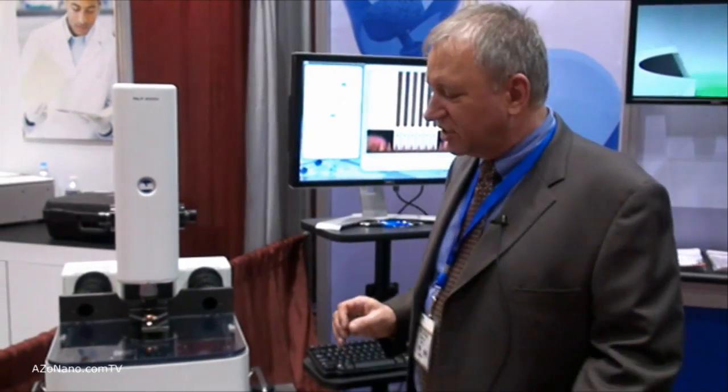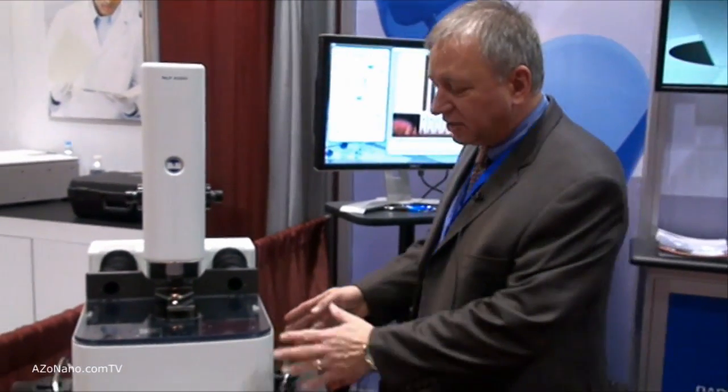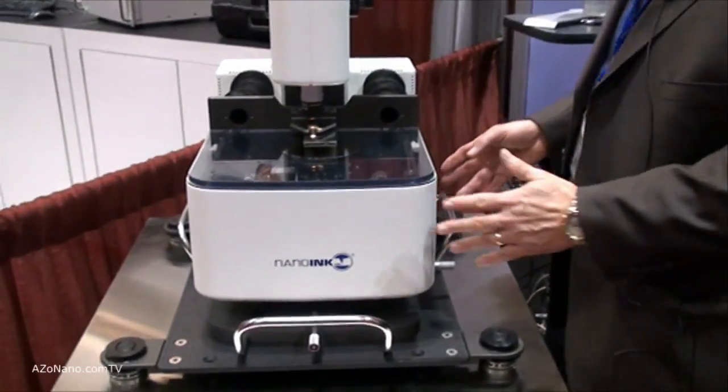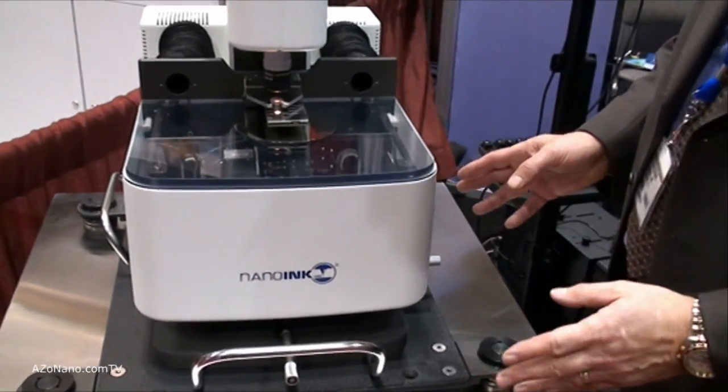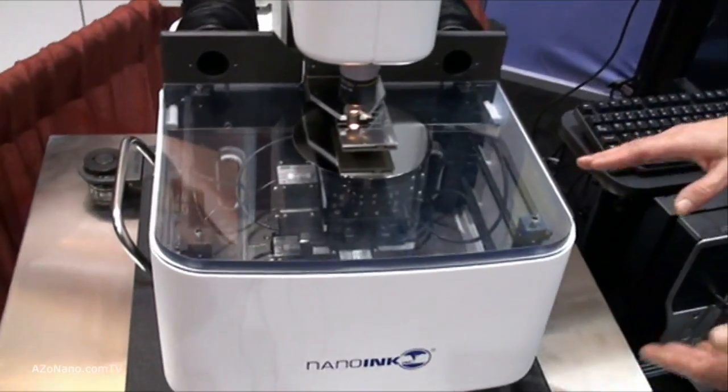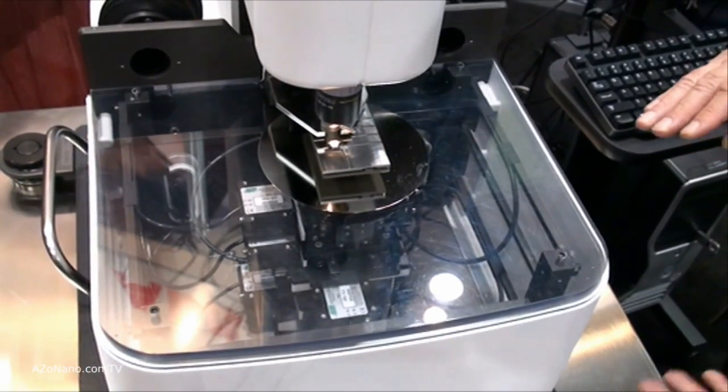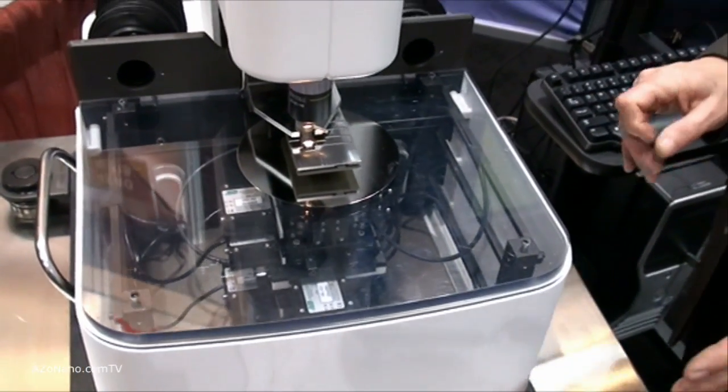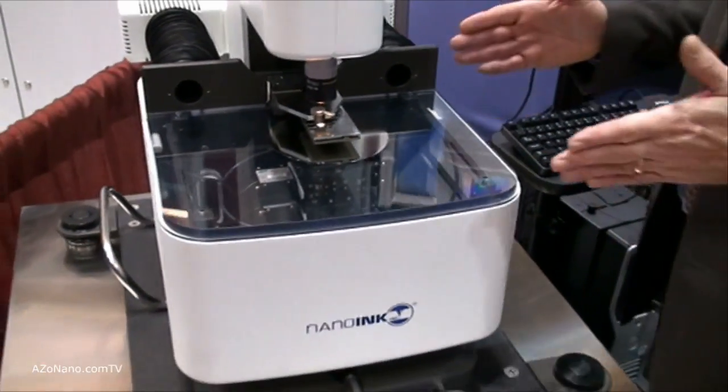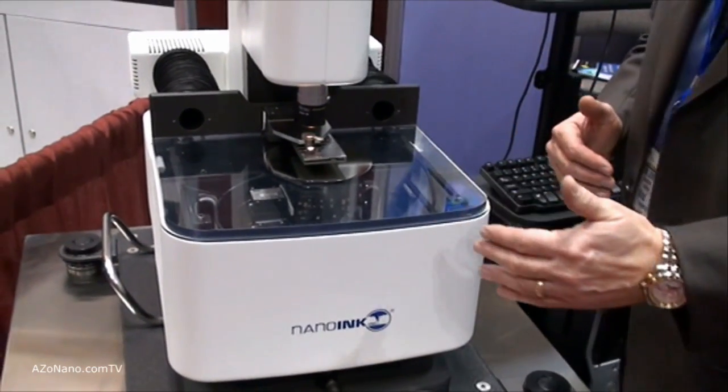Down here, we have the staging. It is a five-axis nanopositioning stage. There are a series of nanopositioners that allow you to move with resolution as small as 5 nanometers over a 40 millimeter by 40 millimeter area.